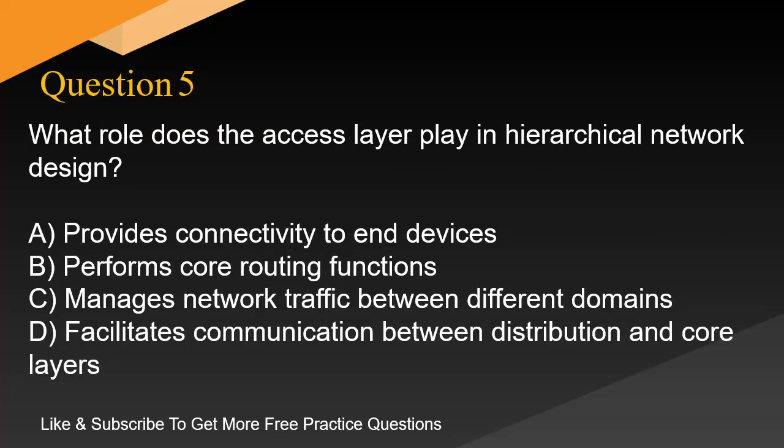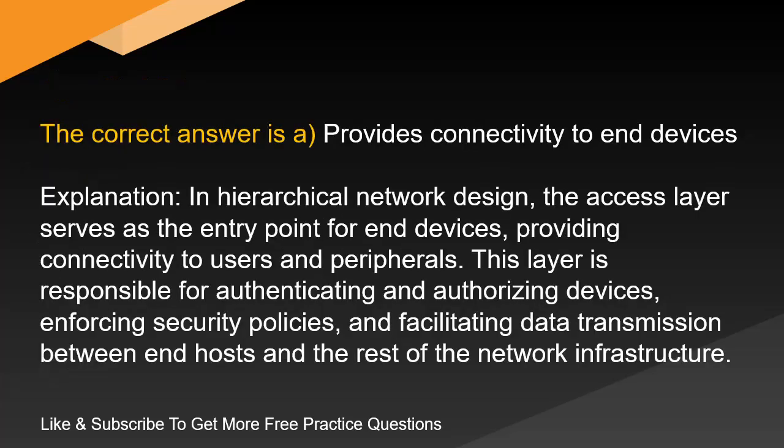Question 5. What role does the access layer play in hierarchical network design? A. Provides connectivity to end devices. B. Performs core routing functions. C. Manages network traffic between different domains. D. Facilitates communication between distribution and core layers. The correct answer is A: provides connectivity to end devices. In hierarchical network design, the access layer serves as the entry point for end devices, providing connectivity to users and peripherals. This layer is responsible for authenticating and authorizing devices, enforcing security policies, and facilitating data transmission between end hosts and the rest of the network infrastructure.